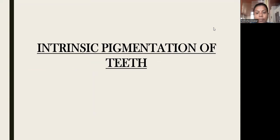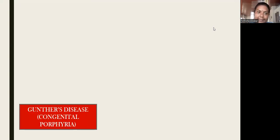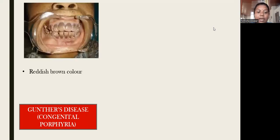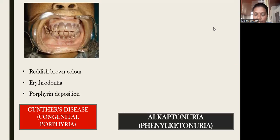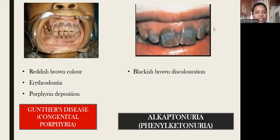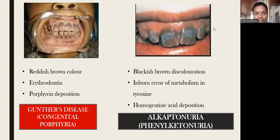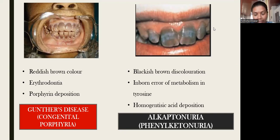Now we will discuss intrinsic pigmentation of the teeth. First is congenital erythropoietic porphyria — as the name suggests, there will be reddish-brown color of teeth, also known as erythrodontia or red tooth. It is due to porphyrin deposition. Next is alkaptonuria or phenylketonuria — blackish discoloration of the teeth due to an inborn error in the metabolism of tyrosine and homogentisic acid deposition, resulting in black color of teeth, tongue, and urine.